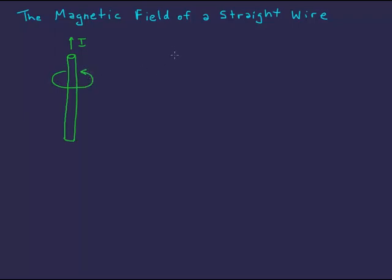And if I was to view that from above, it might look like concentric circles of magnetic field, something like that. But the direction that they circle, you notice here they're going counterclockwise as the current comes towards me.